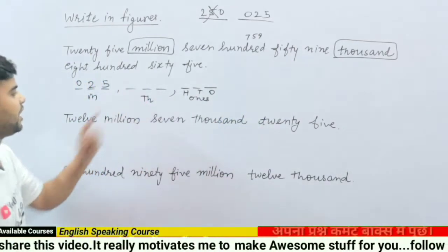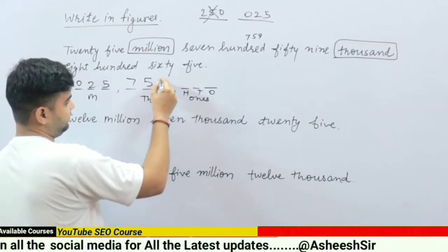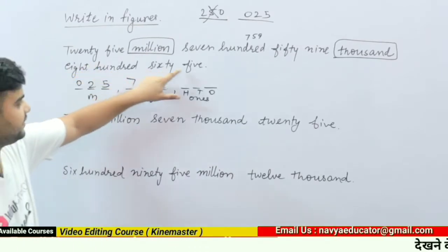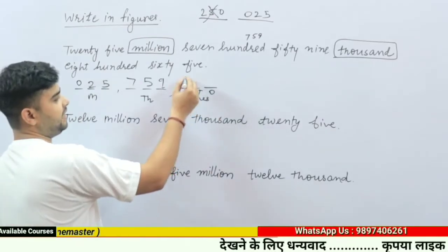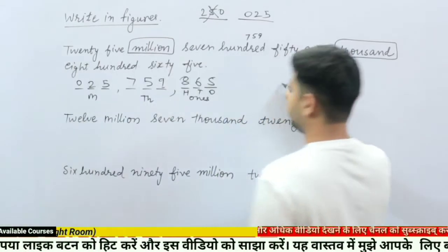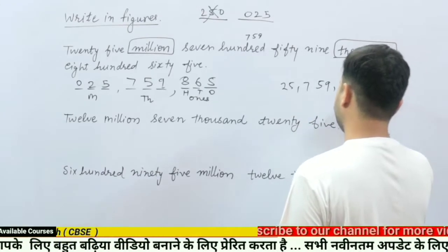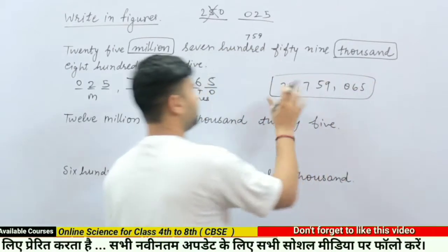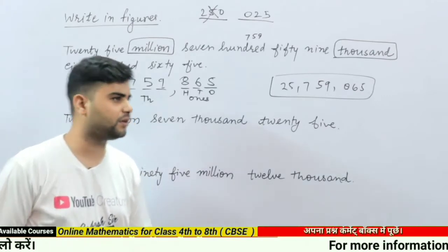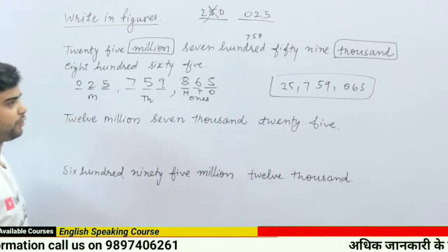Now we write the thousands. Here we have 759 thousand, so in the thousands place we write 759. The last part is 865, so we write 865 in the ones section. The complete figure for '25 million 759 thousand eight hundred sixty-five' is written as 25,759,865. This is the answer. You can use this place value chart technique to write the number correctly.